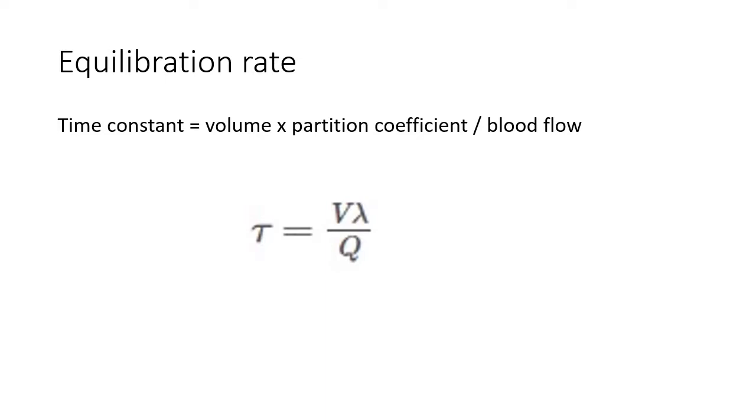A larger compartment has a greater capacity for uptake, therefore it will be slower to equilibrate, therefore it will have a longer time constant, and therefore V is on the top line. A compartment with a high partition coefficient will have a greater capacity for uptake, therefore it will be slower to equilibrate, and therefore it will have a longer time constant, and so lambda is on the top line. We can consider the numerator of this equation to represent the capacity for uptake of that tissue.